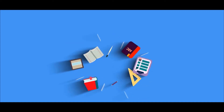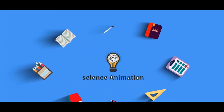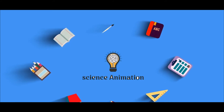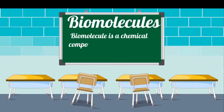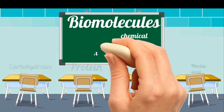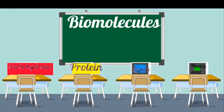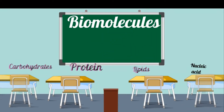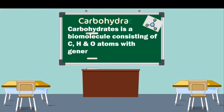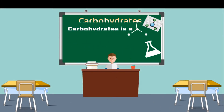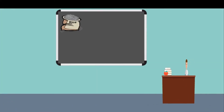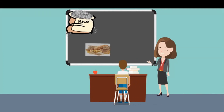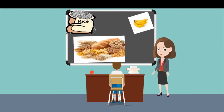In this module we will talk about biomolecules. A biomolecule is a chemical compound found in living organisms. There are four major types of biomolecules: carbohydrates, proteins, lipids, and nucleic acids. Carbohydrates are a biomolecule consisting of carbon, hydrogen, and oxygen atoms. Carbohydrates are found in rice, bread, pasta, banana, and potato.